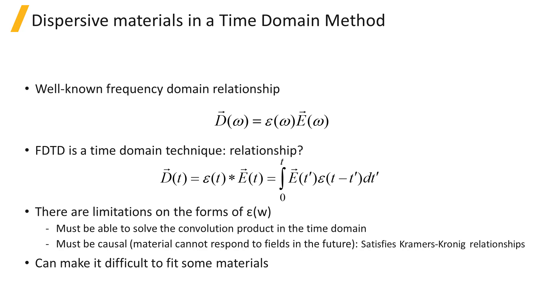This places some restrictions on the relationship between the real and imaginary part of the permittivity, known as the Kramers-Kronig relations. Similar restrictions apply to conductive material models.